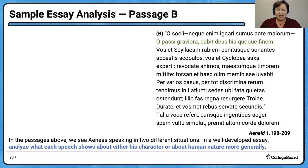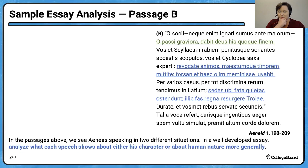He starts by addressing them: 'O socii' — 'Oh allies.' Then he says 'qui graviora passi' — 'oh, those who have endured more serious things.' He encourages them saying 'dabit deus his quoque finem' — 'God will give an end to these things also.' It's interesting that he uses the singular 'deus' — some God, right? After telling them of things they've endured — like the madness of Scylla and the Cyclopean rocks — he encourages them with imperatives. And it's fine in your essay to mention grammatical structure.